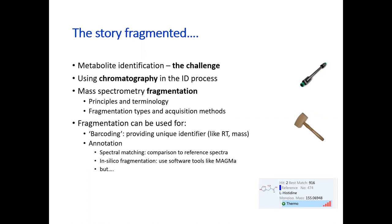The molecules fragment following certain chemistry rules — it's not random, and it happens due to the way they are structured. The fragmentation provides unique structural information. Different structures will fragment differently; similar structures will fragment in a similar way. So we can use fragmentation as a barcode. Taking that into consideration, there are also computational algorithms developed to mimic the fragmentation of molecules — in silico fragmentation — which can be used to do the annotation of metabolites.